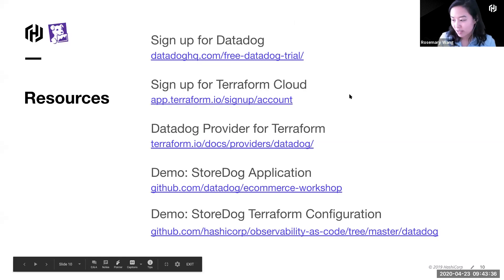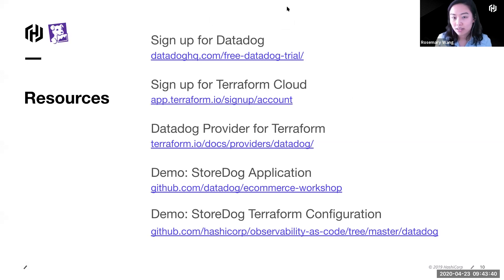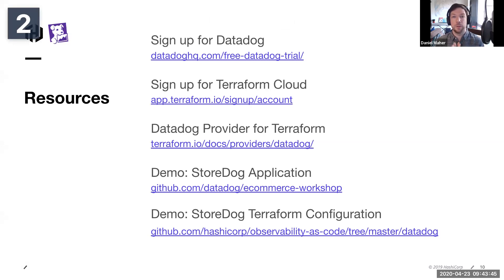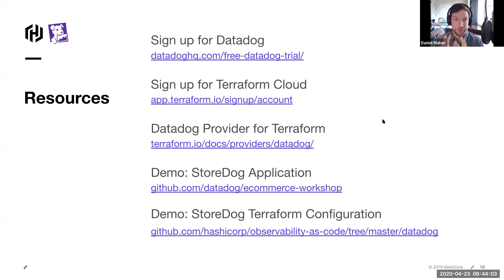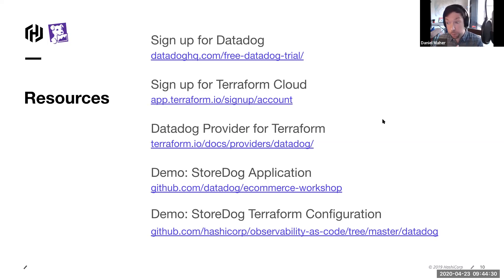We're back at the resources slide. For everybody asking about the repositories and code — the answer is yes, it's all available. Sign up for a free Datadog trial and check out Terraform Cloud. The docs for the provider are excellent and kept up to date. The StoreDog application is available for you to spin up in your own environment with Docker Compose files. The Terraform configuration — exactly what we were looking at in this presentation — is available for you to examine. There's no smoke and mirrors here.